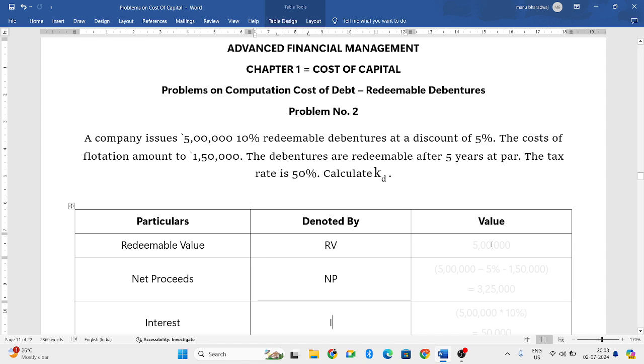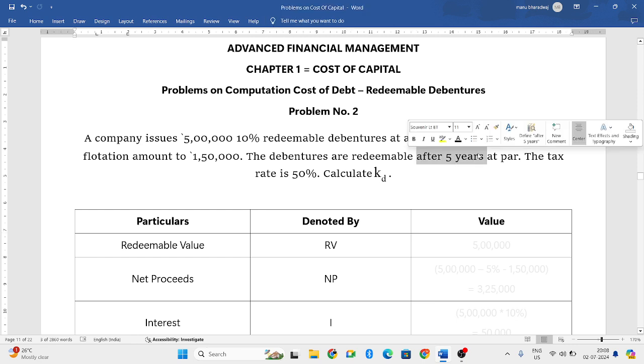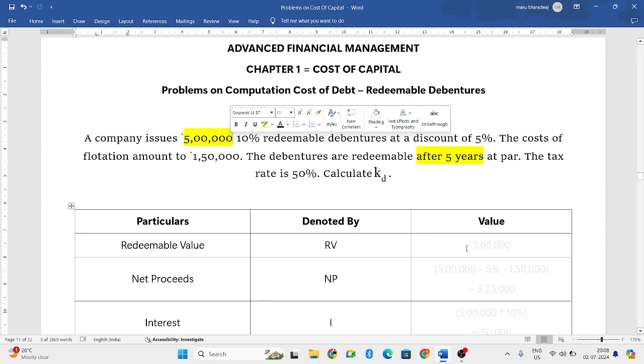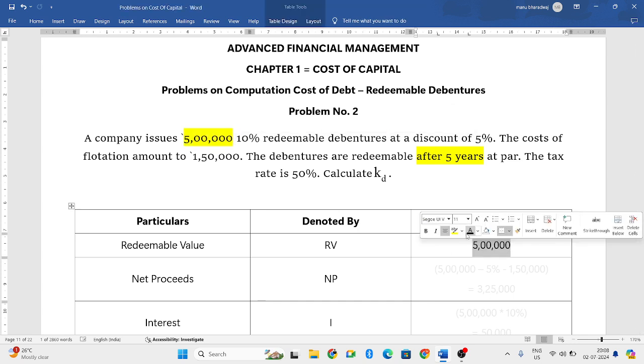So, first we want redeemable value. Means what is the value paid to debenture holders after 5 years. They have told it is at par. So, what is the par value? The par value is Rs 5,00,000. So, our redeemable value becomes Rs 5,00,000.